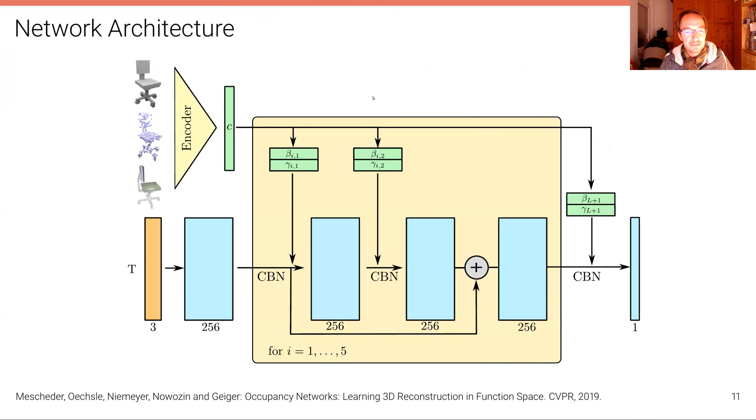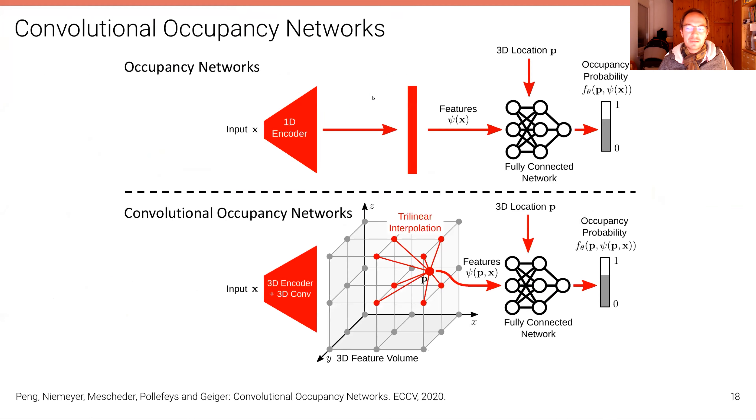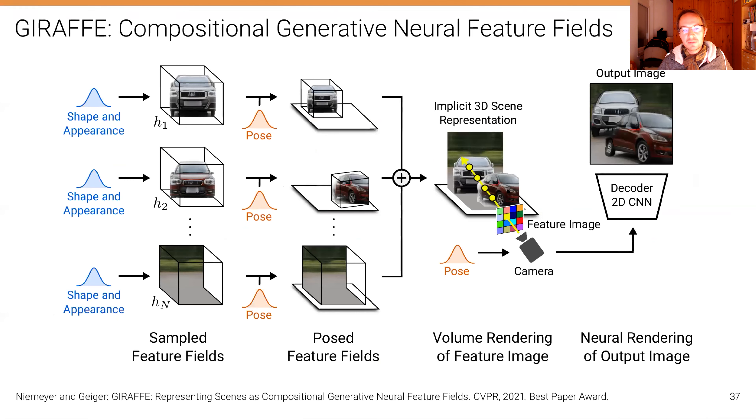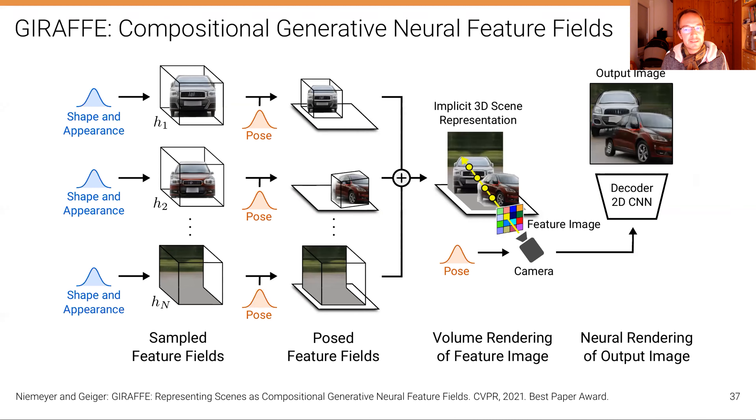Thank you very much for this really interesting and comprehensive presentation. We have a few questions from the audience. Daniel Romero was asking whether the layers in the model from slide 11 are dense — meaning fully connected. Yes, these are fully connected standard MLPs. And he wanted to know how you compose the feature vectors on slide 37. The feature vectors are composed based on their weights and visibility — similar to alpha composition but now for features instead of color. So basically a weighted average.